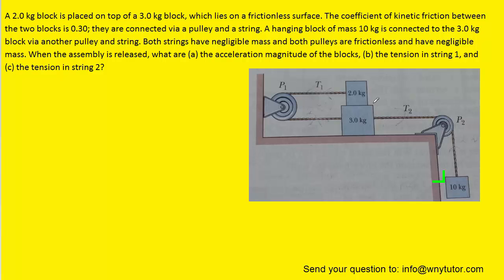What we're going to do is draw a free-body diagram for each of the three blocks. We'll begin with the free-body diagram of the 10-kilogram block. For the 10-kilogram block, we have the gravitational force acting downward, which is mg, and then we have the tension T2 pulling up on the block, and so we've included those forces in the free-body diagram.